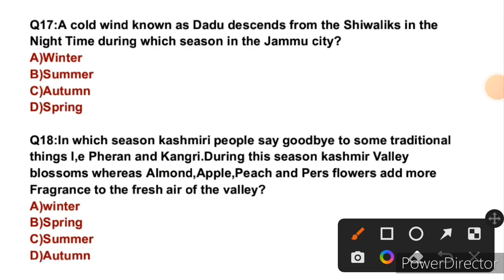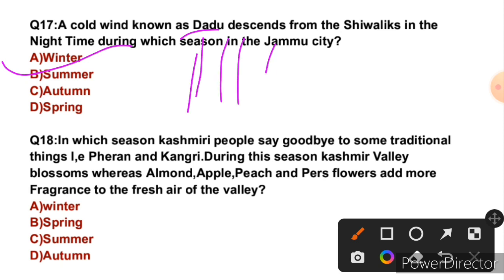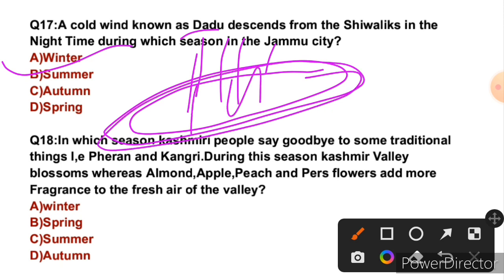Question 17: A cold wind known as Dadu descends from the Shivalik at night time during which season in Jammu city? In Jammu city, the Dadu wind is a cold wind that descends at night during the summer season. So the right answer is B — summer. Because summer has a lot of heat during the day, at night the Dadu winds blow, providing relief to the people.